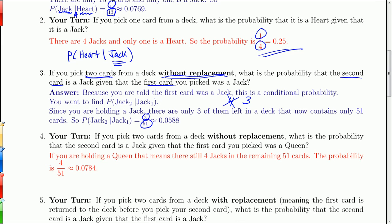Suppose you pick two cards without replacement. What is the probability that the second card is a Jack given that the first card was a Queen? I'm finding the probability of getting a Jack on the second given that you got a Queen on the first. Since you're holding a Queen, there's only 51 cards left. But since you're holding a Queen, there must still be four Jacks. So 4 out of 51, or 0.0784.